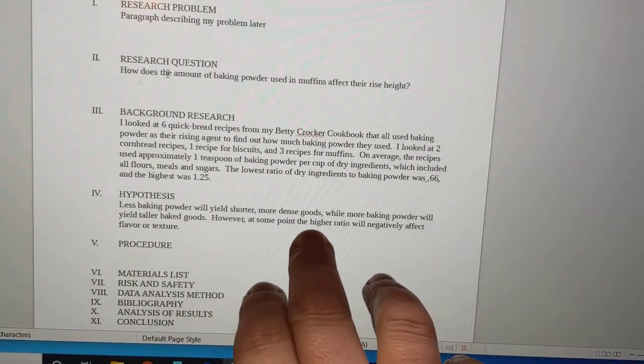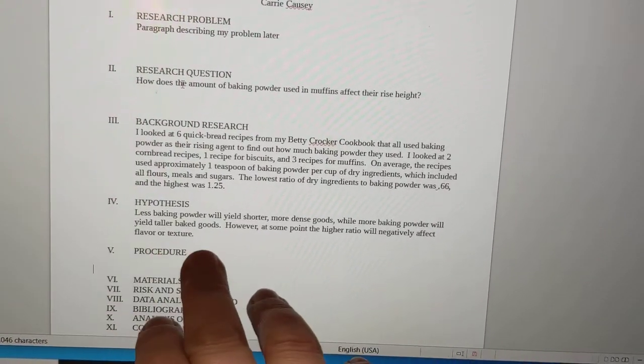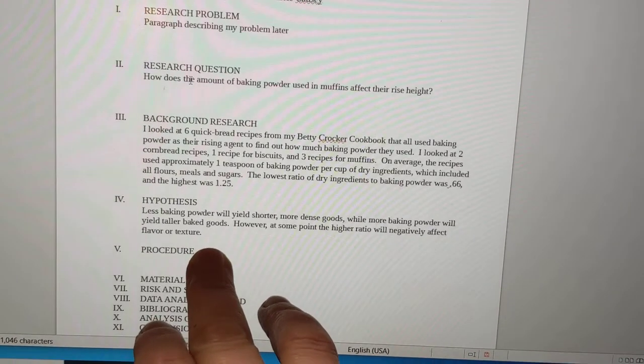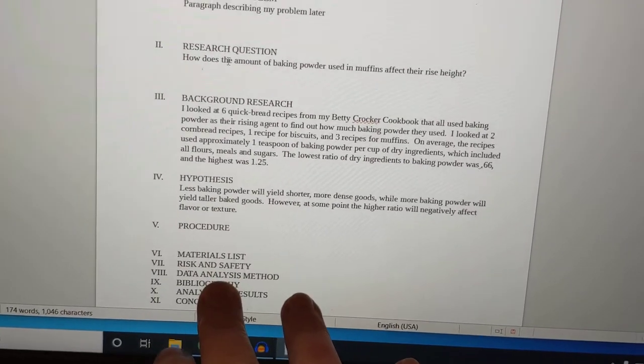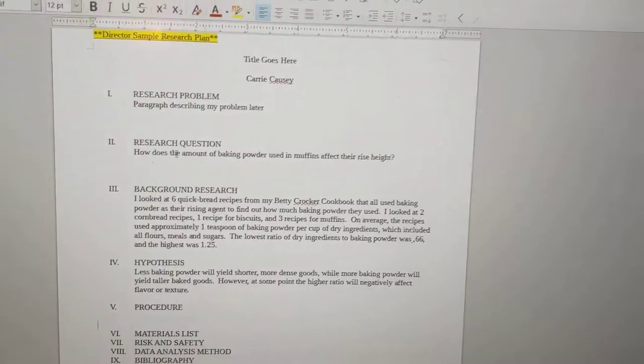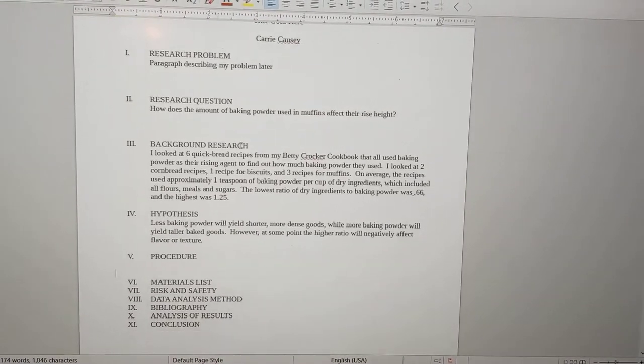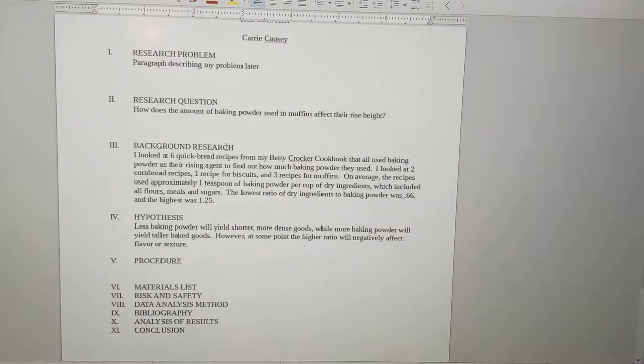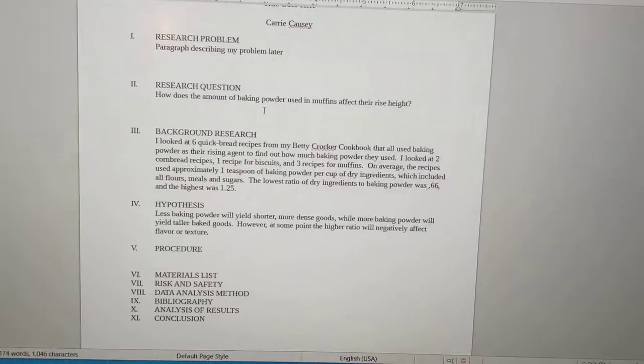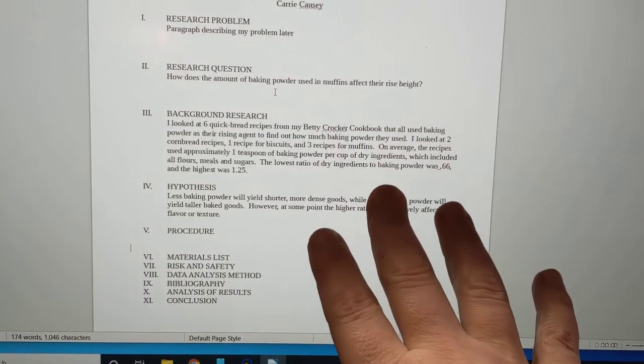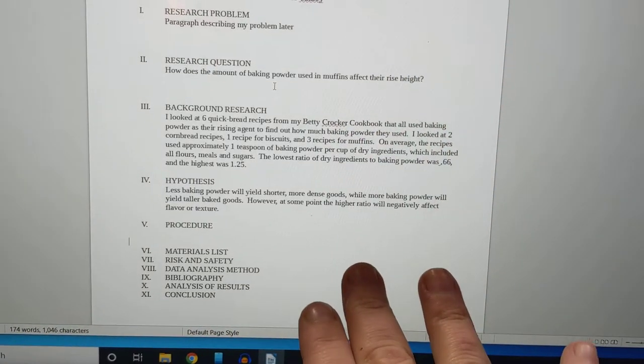Then I was able to write a hypothesis. Less baking powder will yield shorter, more dense goods. More baking powder will yield taller baked goods. At some point, the higher ratio will negatively affect the flavor or texture. So I hope to overrise some of them. We'll see. That's part of my hypothesis. And the rest of this isn't designed yet. So it's literally just sitting there. So I hope that this shows you how to get it started and to just leave yourself space to put more sentences in later here and there and everywhere. Of course, these do not have to be finalized yet. They don't need to be proofread and dressed up and all of that stuff. This is just get something on the page.